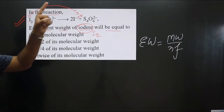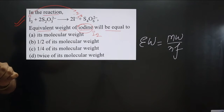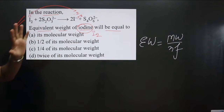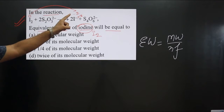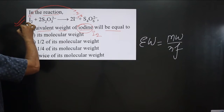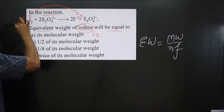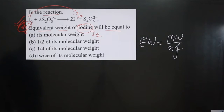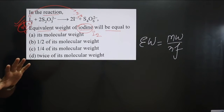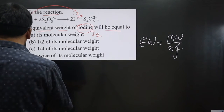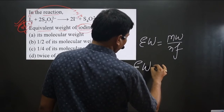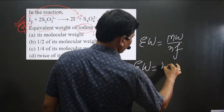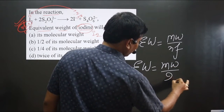The difference in oxidation number is 0 − (−2) = 2, so the n-factor value for iodine is 2. Applying the formula, equivalent weight = molecular weight divided by 2. So the n-factor value we got is 2.